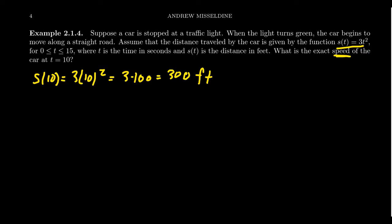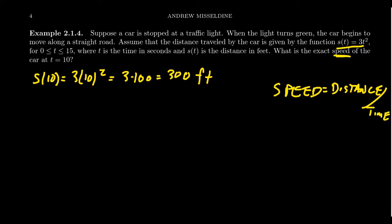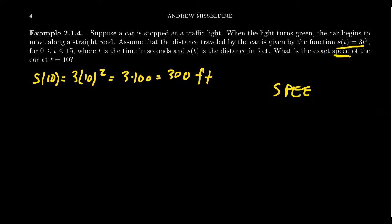What is speed in relation to distance? Speed is a measurement of distance per unit of time. In the United States we drive at speeds measured in miles per hour. The units of our measurements tell us how these things are related: speed equals distance divided by time. In physics, a particle might be moving at so many feet per second.